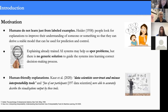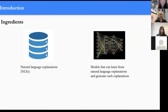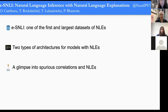The key ingredients are natural language explanations for ground truth labels at training time, and architectures that allow models to learn from and generate such explanations. The first work introduces one of the first and largest datasets of natural language explanations, two types of model architectures, and a glimpse into spurious correlations. Natural language explanations are abbreviated as NLEs throughout.